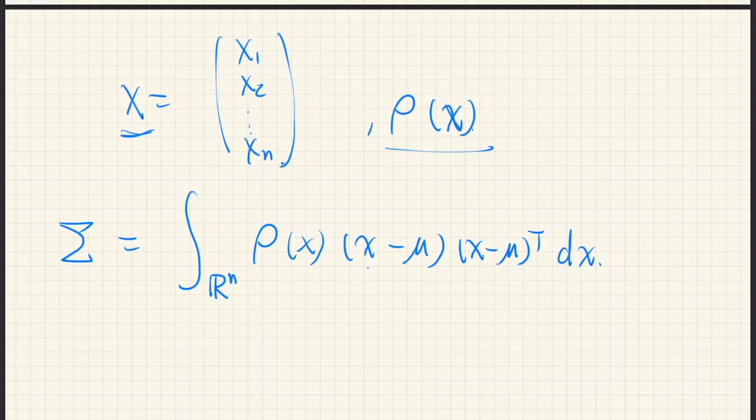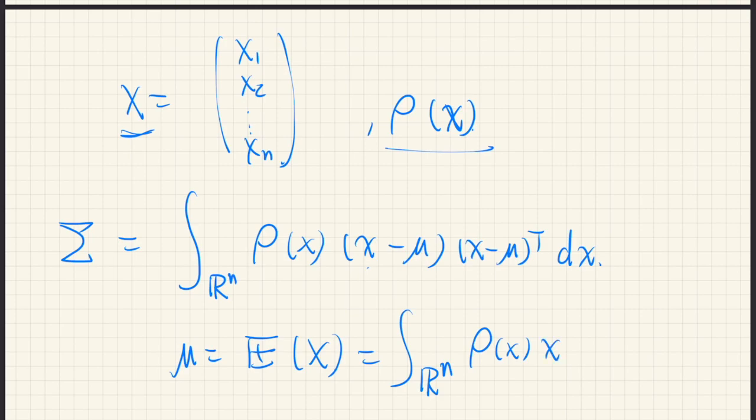Where mu is the expectation value of x, which is of course defined, in this case, as rho x times x dx.